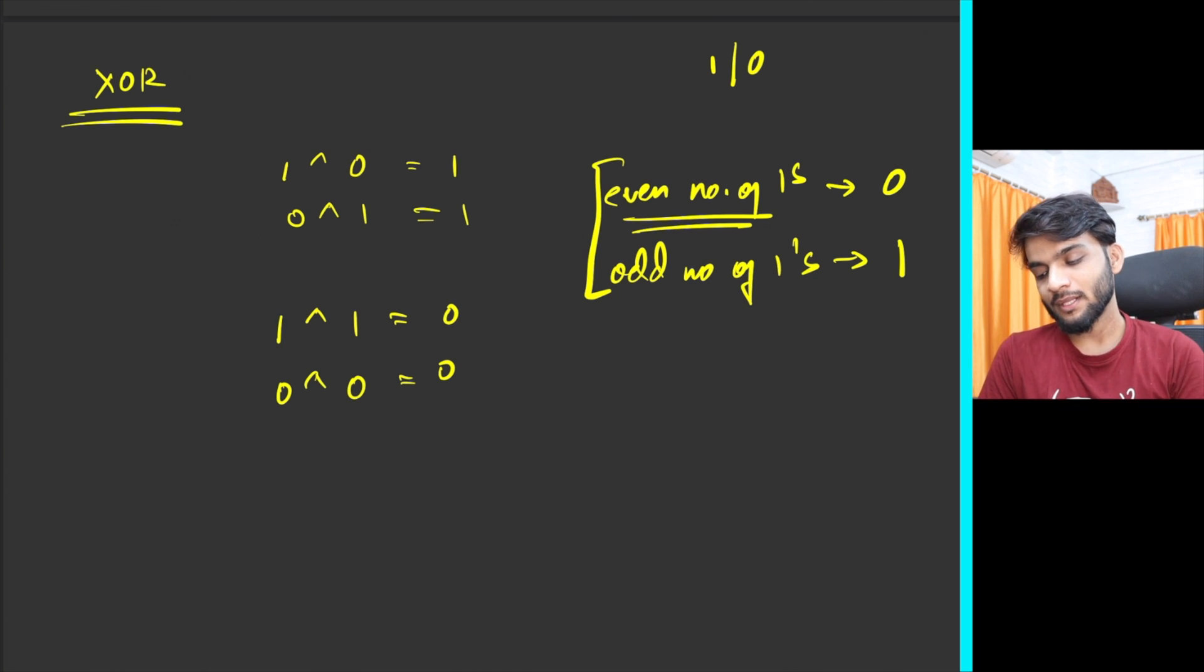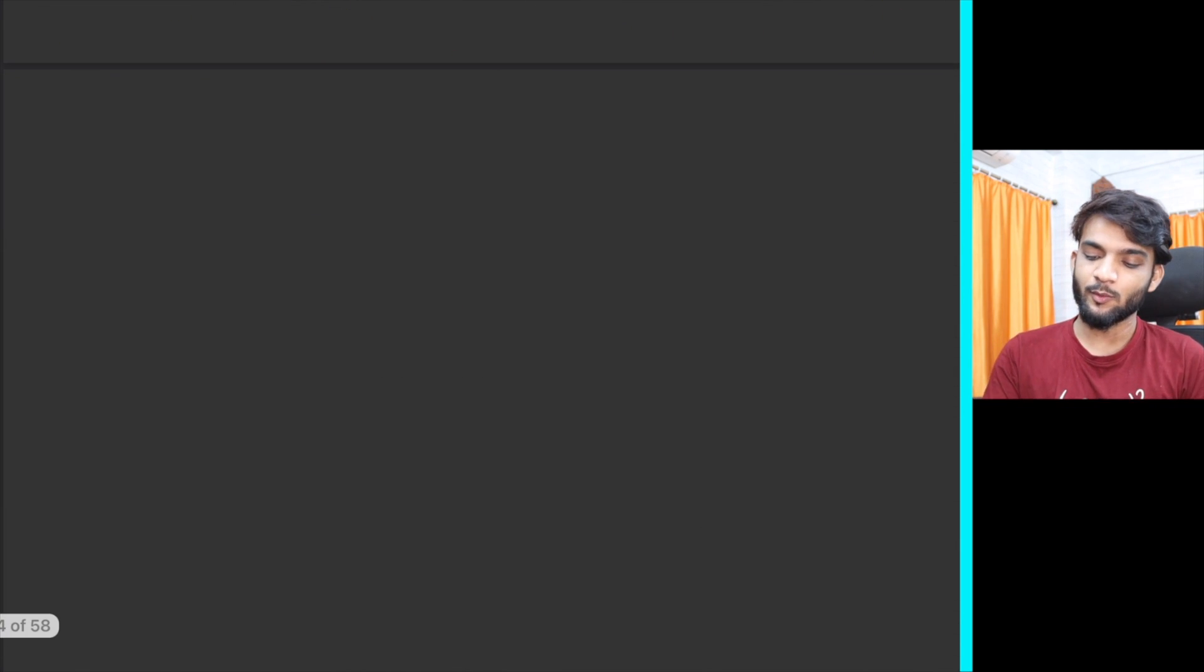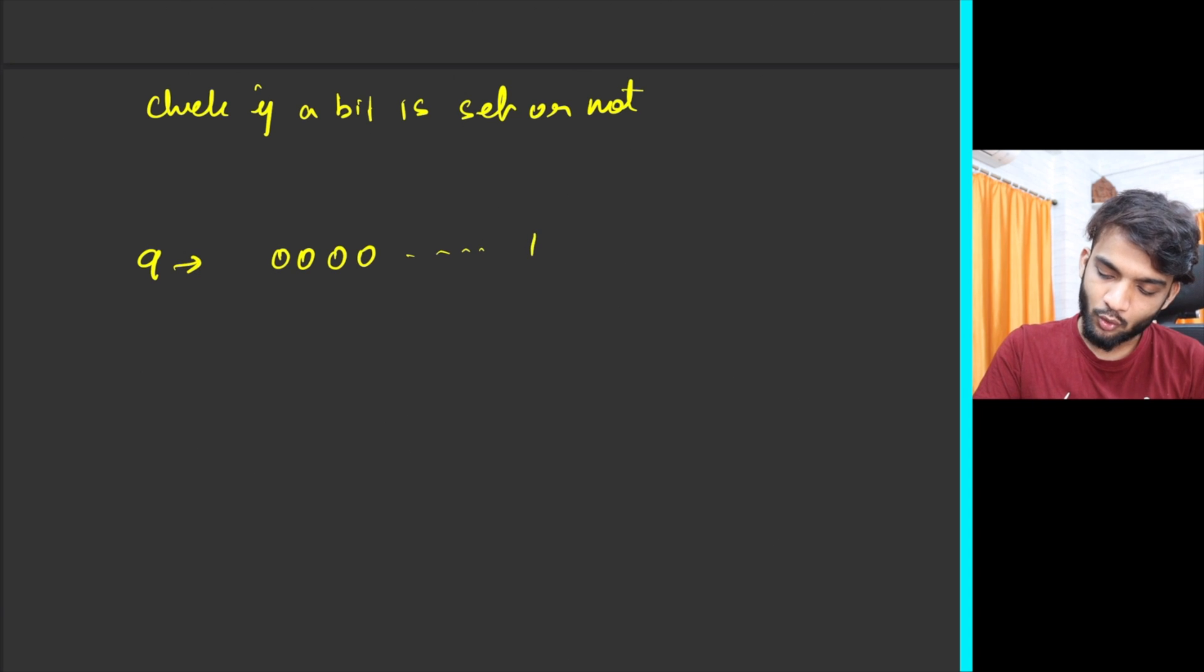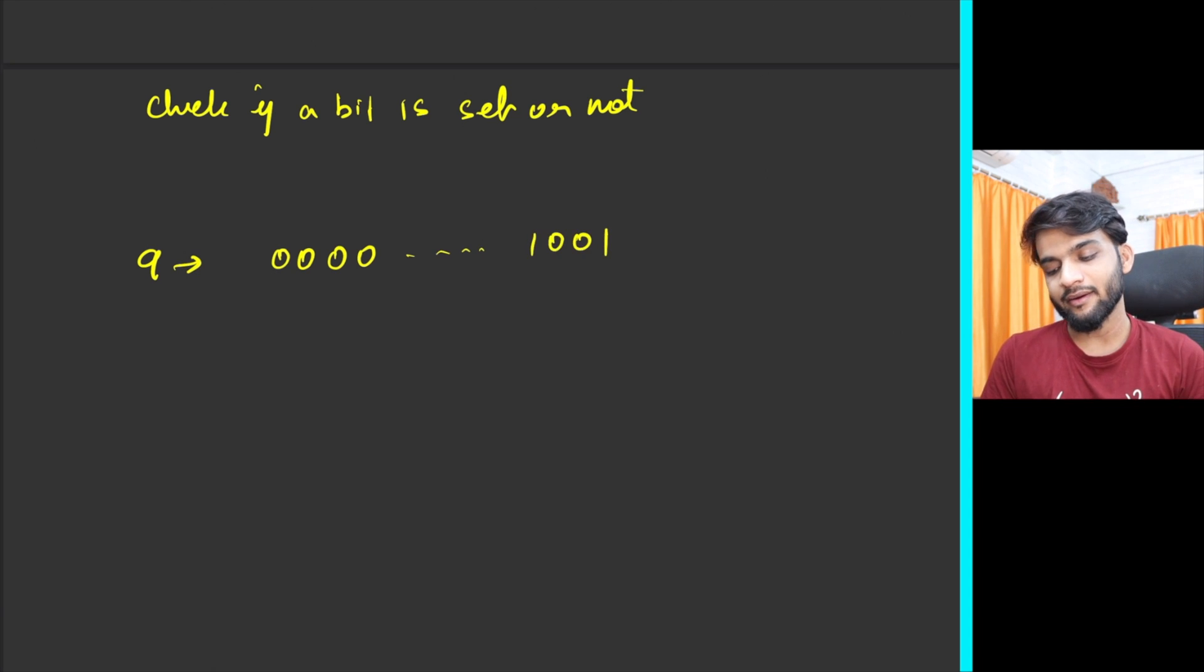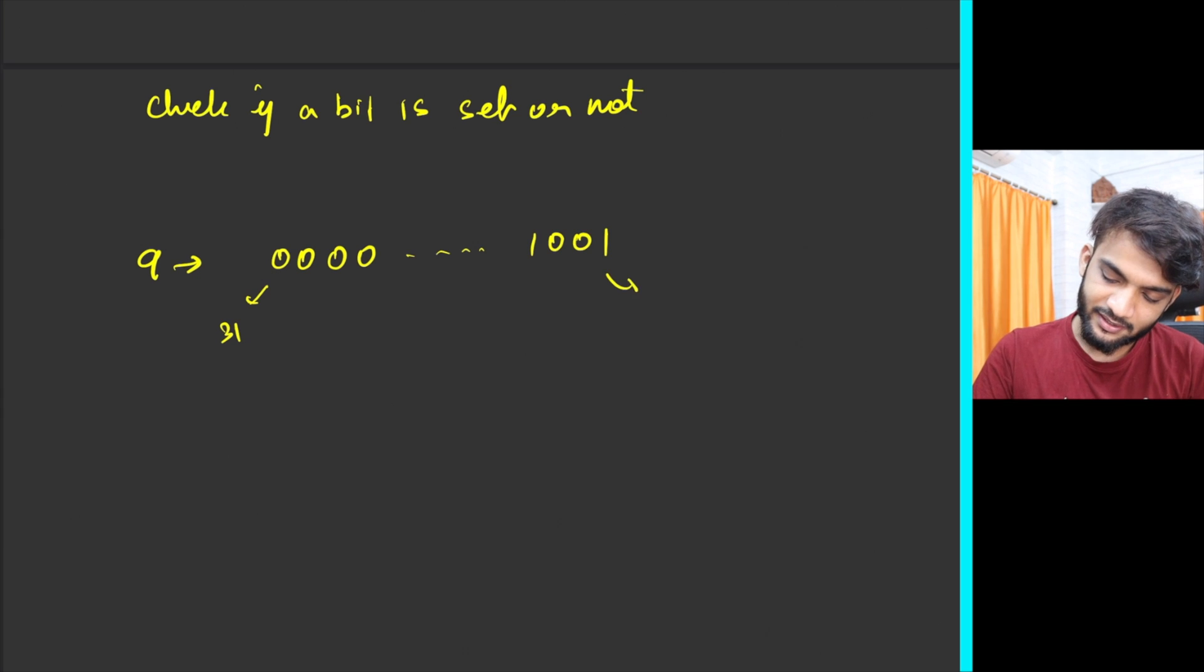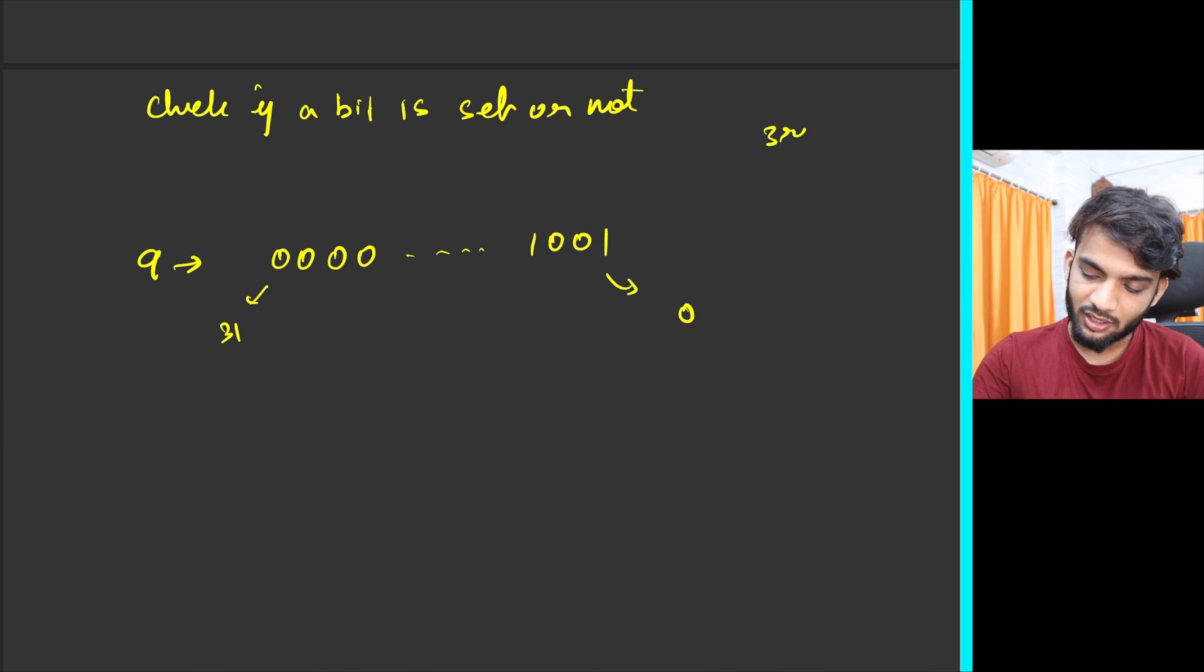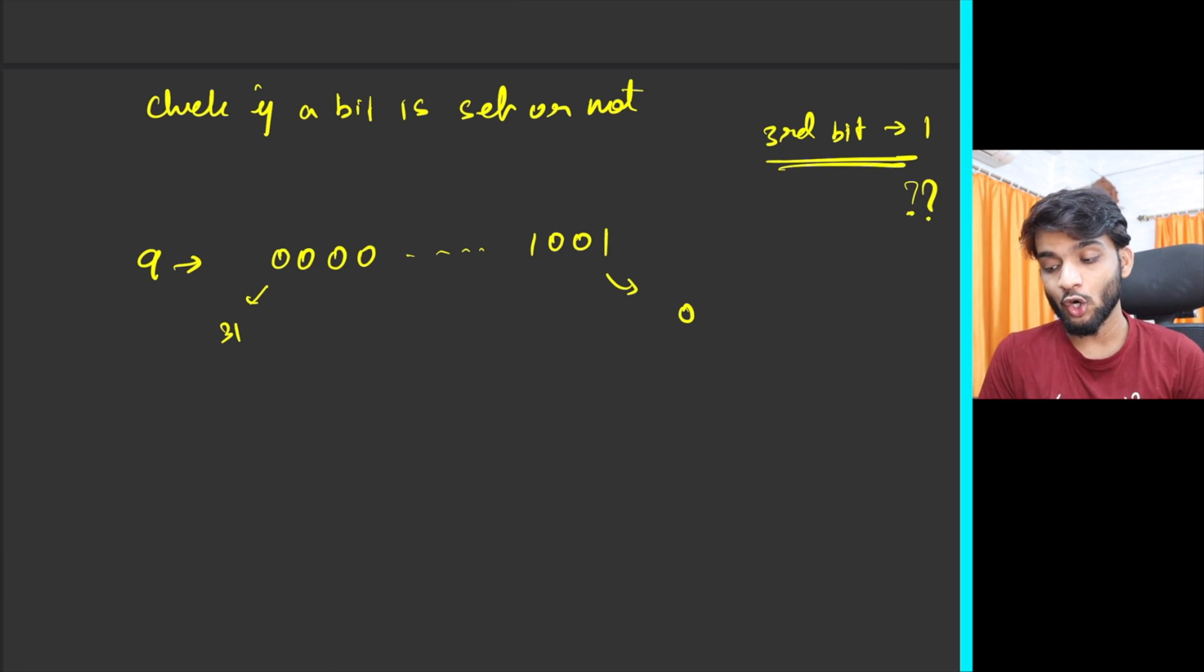Next prerequisite that is required is how to check if a bit is set or not. Whenever I write nine, that's basically 000...1001, where this guy is the 31st bit and this guy is the zeroth bit. If someone says, can you please tell me if the third bit is one or not?